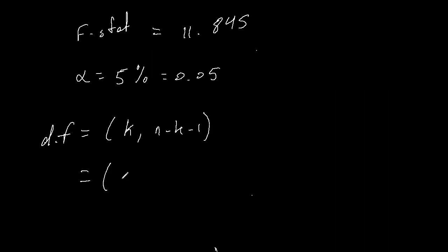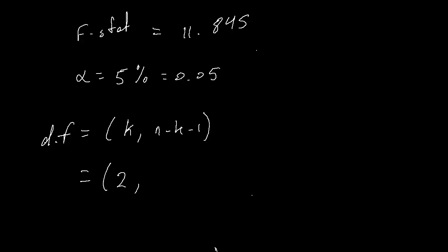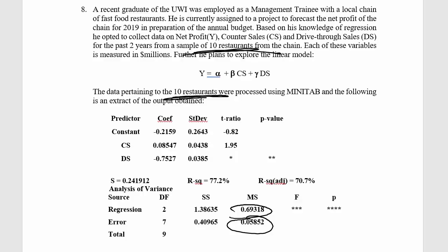Our first degree of freedom is k equals two. For the second we calculate n minus k minus one. Looking at our question, there are 10 restaurants, so n equals 10, minus k equals 2, minus 1, giving us a second degree of freedom of 7. Our degrees of freedom are therefore 2 and 7. Conveniently, the Minitab output already gives us these directly: the degrees of freedom for regression represents k, and the degrees of freedom for error represents n minus k minus one.